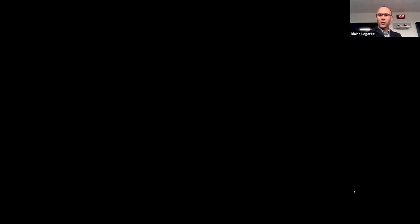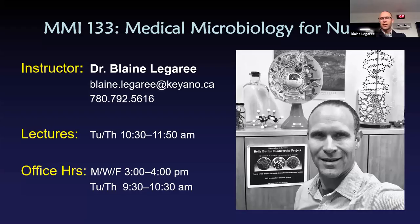We're going to get started here and I want to talk about the course outline and what to expect in this class. Here I am — there's a picture of me. My name is Blaine LeGuerre. I got my PhD at the University of Guelph and I studied bacteria, penicillin, a whole bunch of things like that. So I'm a microbiologist — this is my area of expertise.